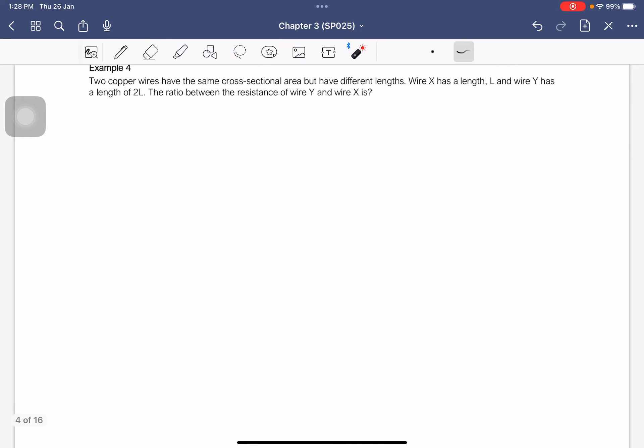Example number 4. We have two copper wires have the same cross-sectional area, but have different lengths. Wire X has a length L, wire Y has a length of 2L. The ratio between the resistance of wire Y and wire X is. So we know that the cross-sectional area is the same. Now they ask for resistance. We know that resistance is equal to rho LX over A. And for Y is rho LY over A.